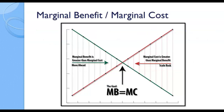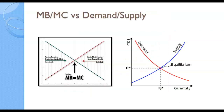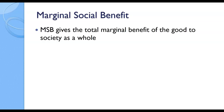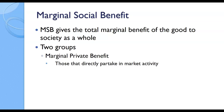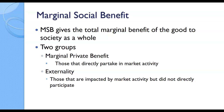We're talking about marginal benefit and marginal cost — technically the marginal private benefit and the marginal private cost. This is for people directly involved with the market: the buyers and the sellers. But we're not just talking about people who directly buy the good; we're talking about everybody. So instead of marginal private benefit, we have the marginal social benefit, or MSB, which gives the total marginal benefit of the good to society as a whole. There are two groups: those directly involved in the market who receive the marginal private benefit, and the external group — the Katies of the world — who are impacted by market activity but did not participate, positively or negatively.